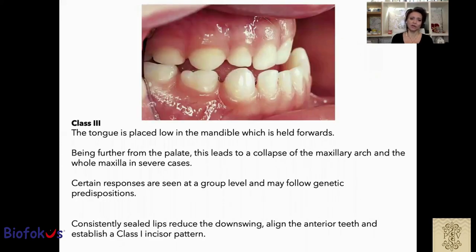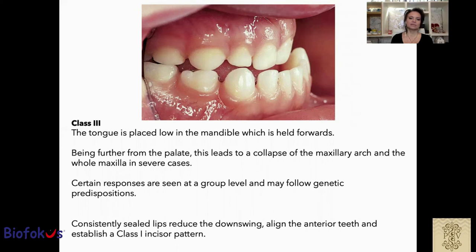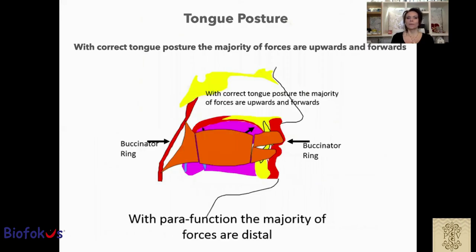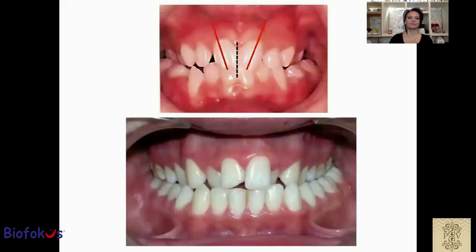In class 3, the tongue is placed low in the mandible, which is held forward. Being further from the palate, this leads to a collapse of the maxillary arch and the whole maxilla in severe cases. Certain responses are seen at the group level and may follow genetic predisposition, but consistently sealing the lips, reducing the downswing, aligning the anterior teeth, and establishing a class 1 incisal pattern are important. With correct tongue posture in the palate, the majority of forces are upright, while with poor function, the majority of forces are distal because of the buccinator ring. When a wrong swallowing pattern and a low tongue posture coexist, we can get endognathia with all these lingually inclined teeth.